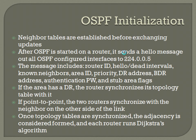The hello message also includes the area ID, the priority, the designated router address if there's one already, the backup designated router address if there is one already, an authentication password if that applies, and any stub area flags if those apply. If the area has a DR, the router synchronizes its topology table with the DR. If it's a point-to-point link, the two routers synchronize with the neighbor on the other side of the link.